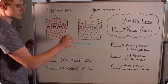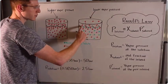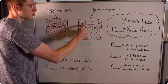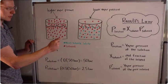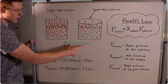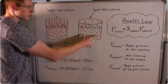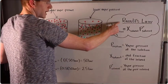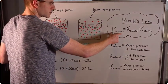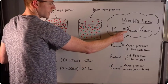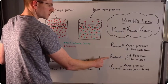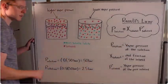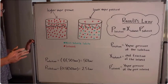The reason for this is that we've essentially crowded out the surface of the solution, and the solvent molecules now have a harder time evaporating. So whenever you dissolve a non-volatile solute into a pure solvent, you lower the vapor pressure — that's Raoult's Law. Mathematically, Raoult's Law says that the vapor pressure of the solution, P_solution, is equal to X_solvent — the mole fraction of the solvent — times P_solvent, the vapor pressure of the pure solvent. Let's think about this with a couple examples.